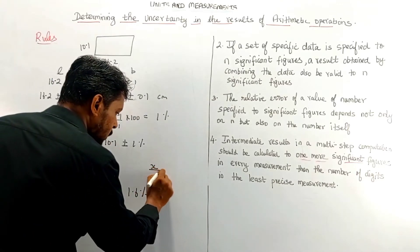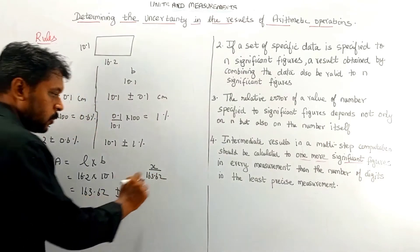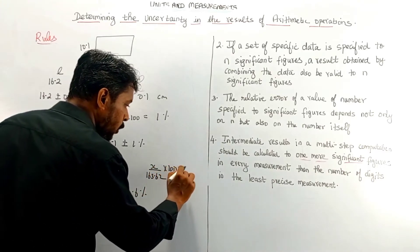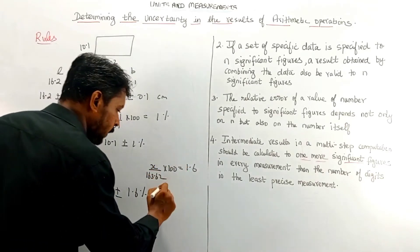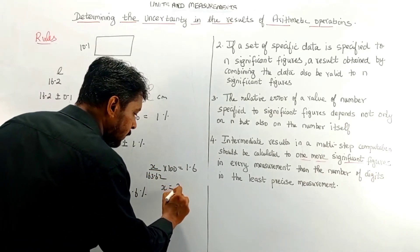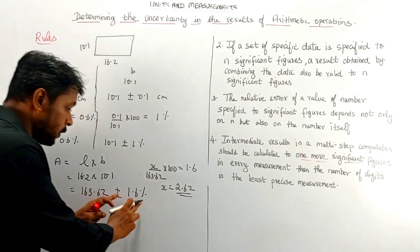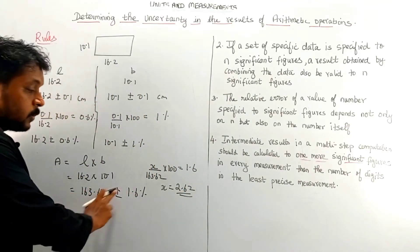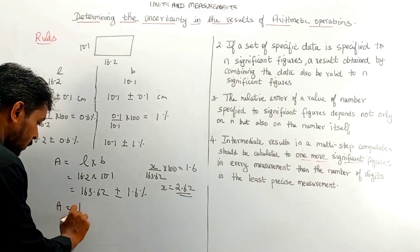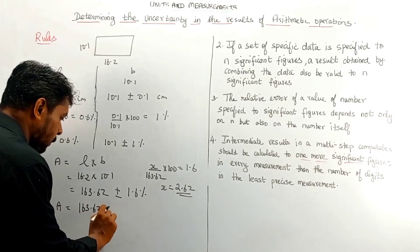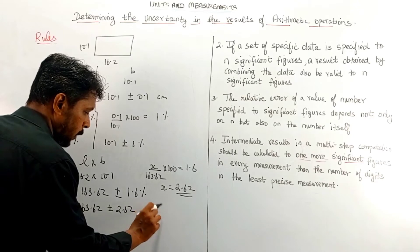Now let us find the actual error value. Take x divided by the total value 163.62 into 100 equals 1.6 percent. When you calculate x you will be getting the value as approximately 2.62. So 1.6 percent of 163.62 is 2.62. I am representing the area as 163.62 ± 2.62 centimeters square.